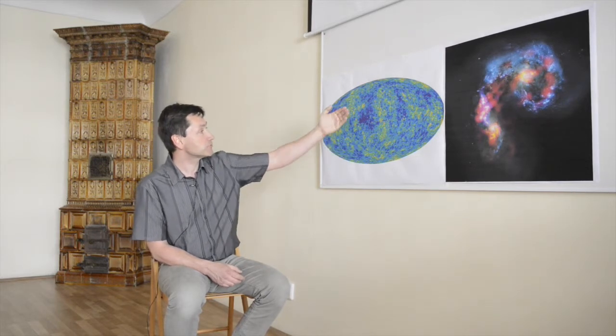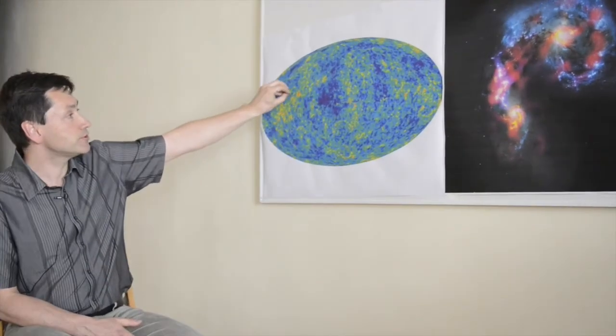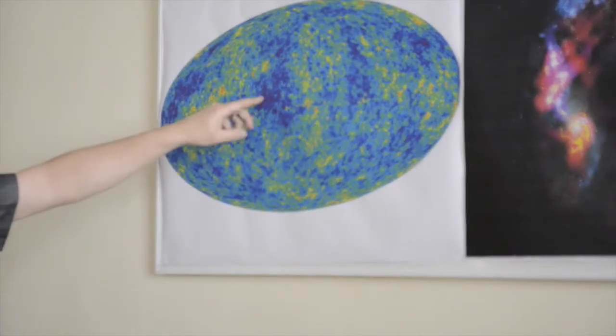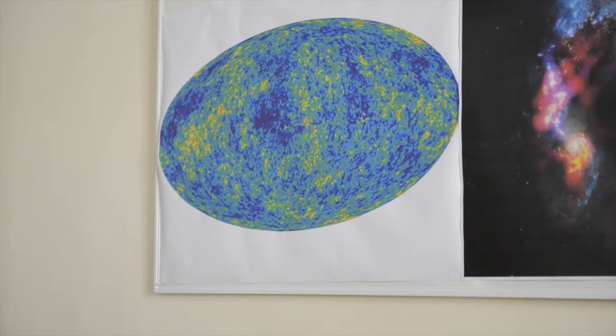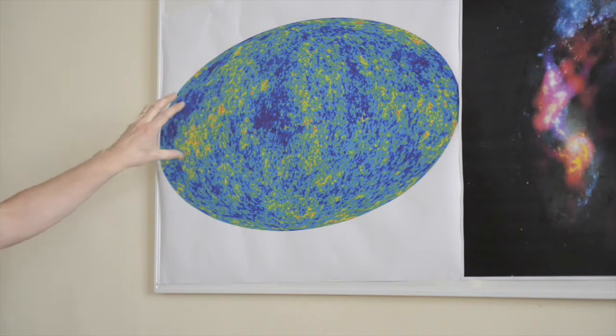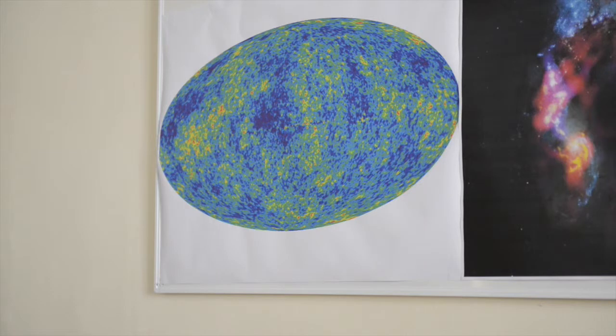What we see here are spots of different colors. The red color shows the places where the Universe is slightly hotter and denser than in the other parts. The coolest and less dense places are given by the blue color. And out of these small overdensities, larger structures have formed through the gravitational collapse.